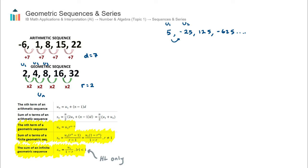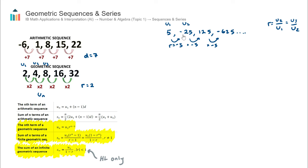How do we get from 5 to negative 25? One way to find out is using this formula: the common ratio is the second term divided by the first term, which equals the third term divided by the second term, and so on. In this case, negative 25 divided by 5 gives negative 5. So the common ratio is negative 5. When we have a negative common ratio, the term values switch between positive and negative, because a positive multiplied by a negative is negative, and a negative multiplied by a negative is positive.